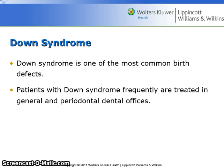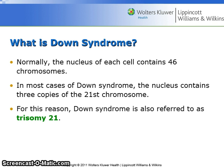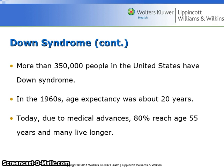Down syndrome is one of the most common birth defects, and patients with Down syndrome frequently are treated in general and periodontal dental offices. Normally, the nucleus of each cell contains 46 chromosomes; in most cases of Down syndrome, the nucleus contains three copies of the 21st chromosome, which is why Down syndrome is also referred to as Trisomy 21. More than 350,000 people in the United States have Down syndrome. In the 1960s the life expectancy was about 20 years, but today, due to medical advances, 80% of Down syndrome patients reach age 55 and many live longer.